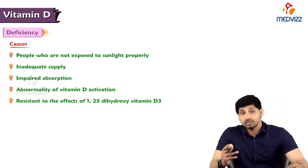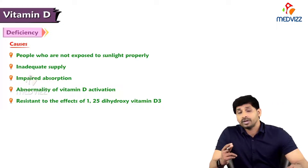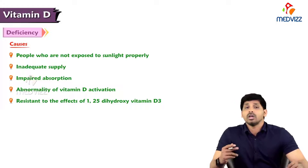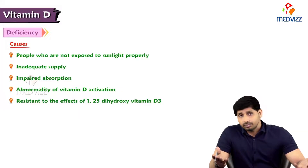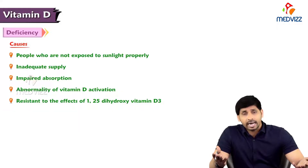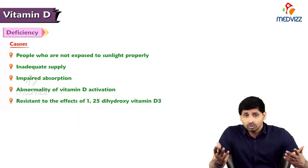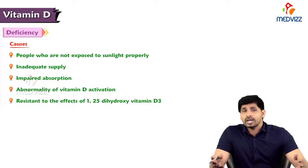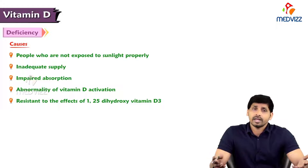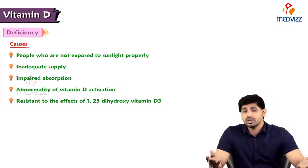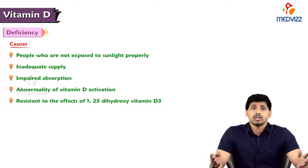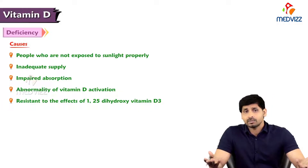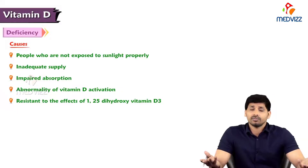Another cause is abnormality of vitamin D activation, especially in cases of liver failure or renal failure. If liver cells are not working properly, 25-alpha hydroxylase cannot add a hydroxyl group at the 25th carbon. Similarly, in renal failure, renal cirrhosis, nephrotic syndrome, or glomerulonephritis, renal cells will not work properly, so there is no addition of a hydroxyl group at the first carbon, meaning no proper activation of vitamin D.